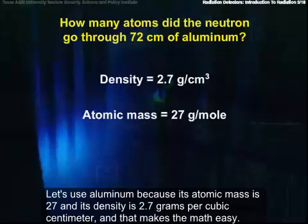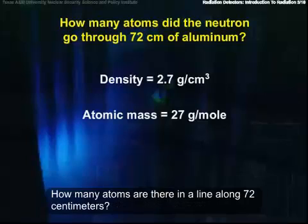Let's use aluminum because its atomic mass is 27 and its density is 2.7 grams per cubic centimeter, and that makes the math easy. How many atoms are there in a line along 72 centimeters? Well, let's see.